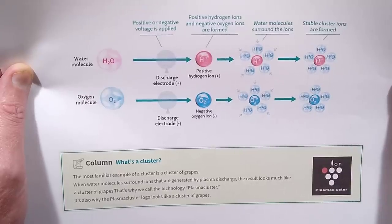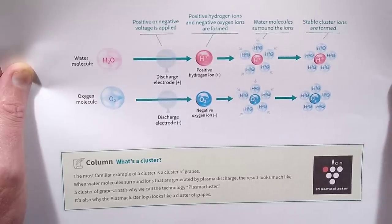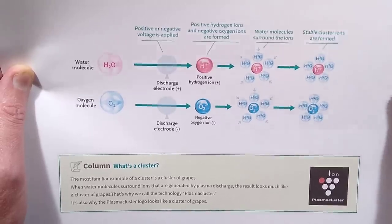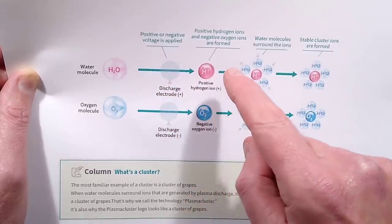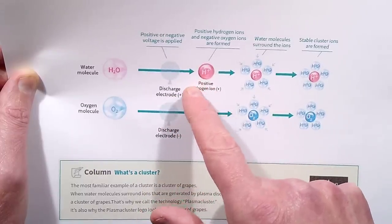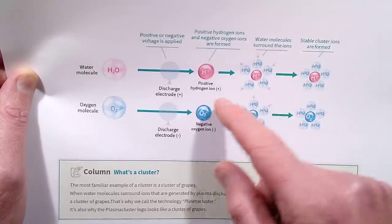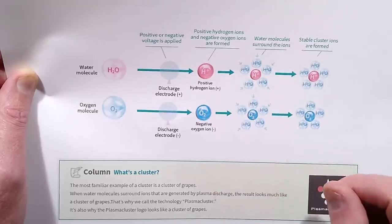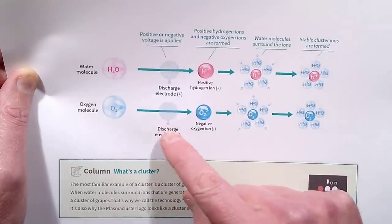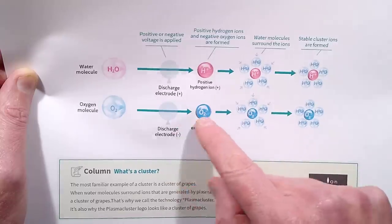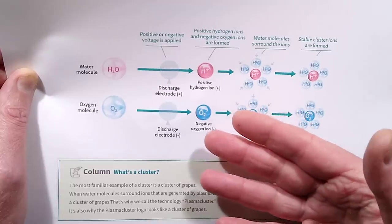These modules - they go to great pains in the advertising to make it out that they've got this special thing. Let's see what they describe it as. I shall read their promotional literature. You ready for this? 'What's a cluster? The most familiar example of a cluster is a cluster of grapes. When water molecules surround ions generated by plasma discharge, the result looks much like a cluster of grapes.'